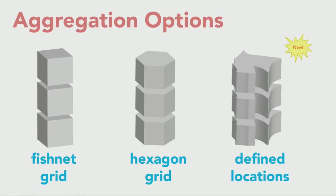For spatial aggregation options, you can aggregate spatially into a fishnet grid. We added the option to aggregate into a hexagon grid. And new in Pro 2.0, you can actually aggregate into defined locations. So if you're aggregating crime incidents, it might be more meaningful to aggregate into police precincts rather than a fishnet grid. Or if you're looking at online sales data, you could aggregate into sales territories — defined locations that you provide.